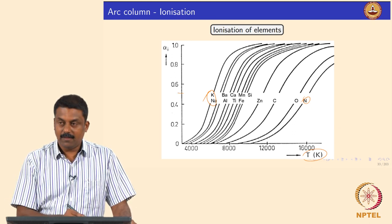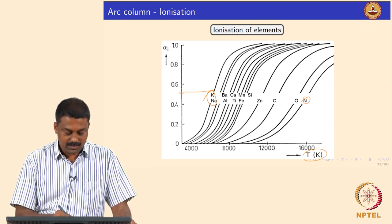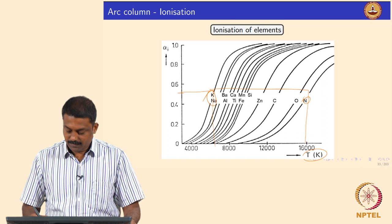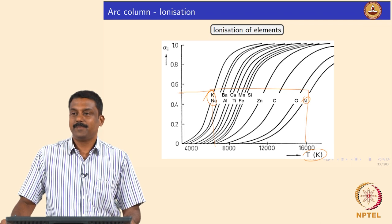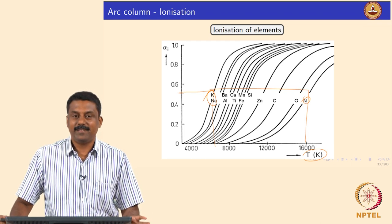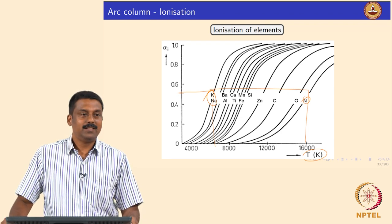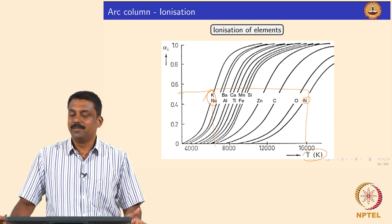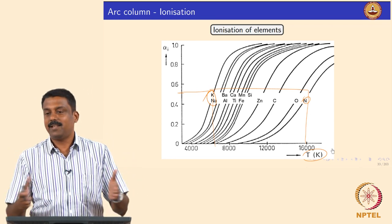Similarly, for 50 percent ionization, it can never happen for nitrogen at temperatures of about 7000 Kelvin. The system temperature should be increased close to 60,000 Kelvin — then only you can ionize and have sustained discharge. That is why we need to heat it up to such temperatures in an arc; otherwise you will never have sustained discharge.